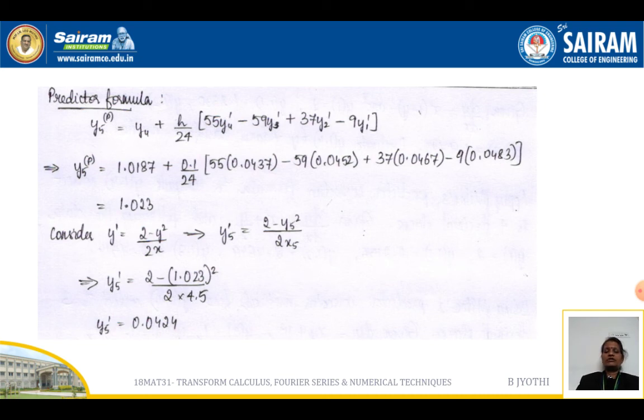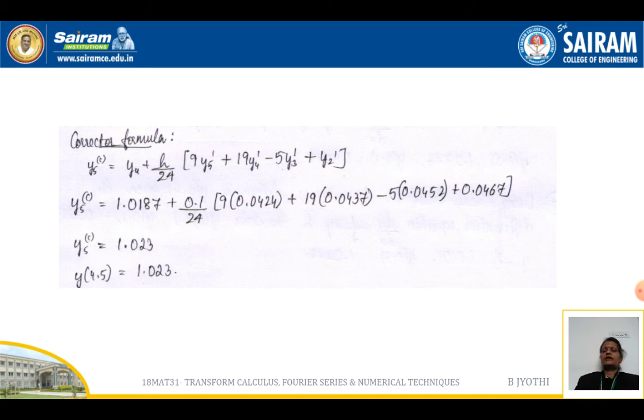This value will be used in the corrector formula. The corrector formula gives y₅(c) = y₄ + h/24[9y₅' + 19y₄' - 5y₃' + y₂']. Substitute the respective values.